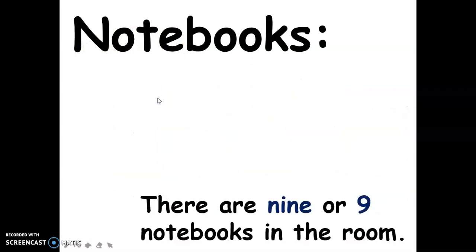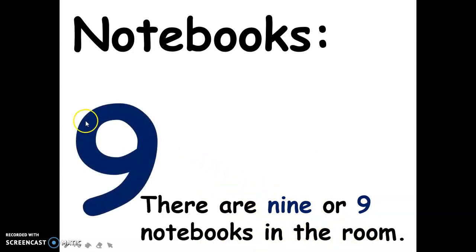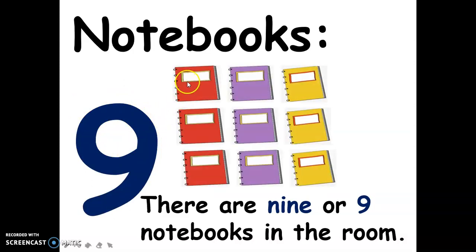Next, for the notebooks — there are nine notebooks in the room. This is the spelling of nine, and this is the numerical symbol for nine. And these are the nine notebooks: one, two, three, four, five, six, seven, eight, nine.